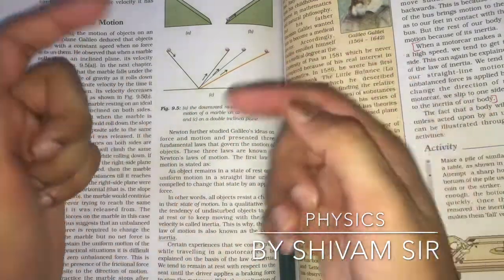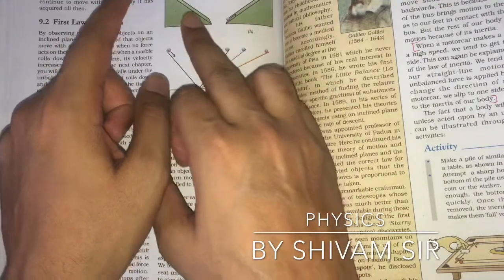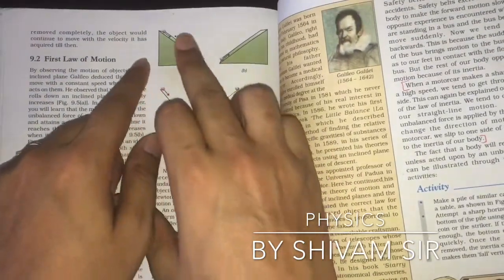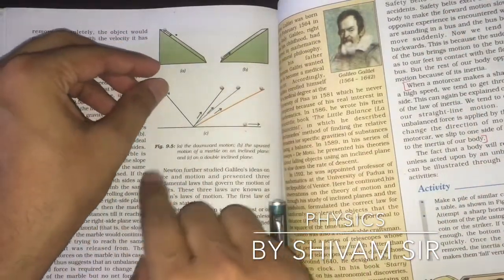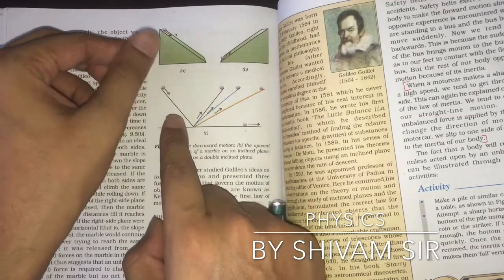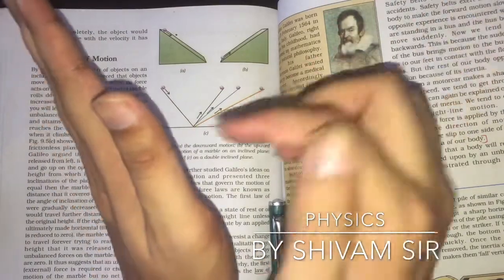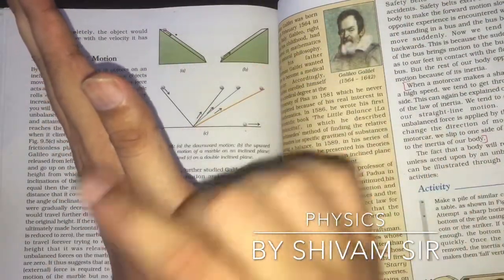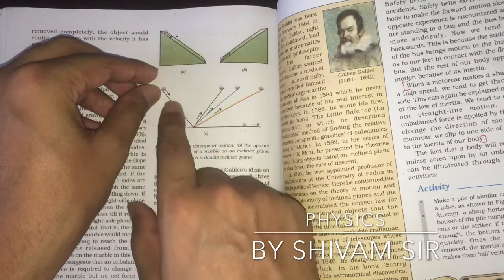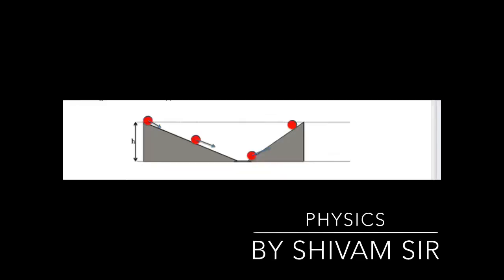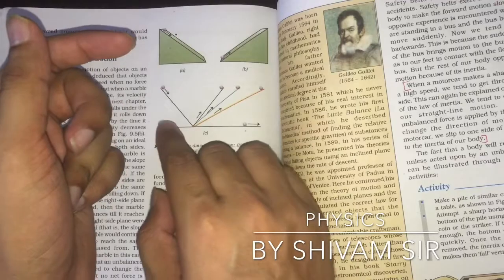Galileo studied the motion of a body on an inclined plane. He took two inclined planes placed facing each other. He released a marble from a certain height on the left inclined plane. His first observation was that when the marble is released from the left side, it reaches the same height on the right side.